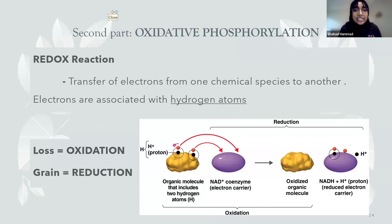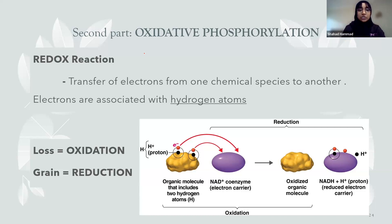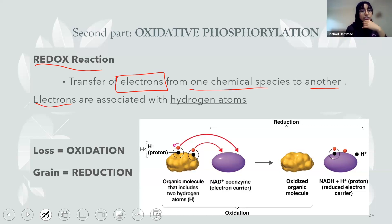Now for the ETC and oxidative phosphorylation. This whole concept is based on utilizing redox reactions — a lot of this is from high school or middle school. A redox reaction is the transfer of electrons from one chemical species to another. The electrons are the main character. In oxidative phosphorylation specifically, the electrons are associated with hydrogen atoms, and we'll see this applied later on.